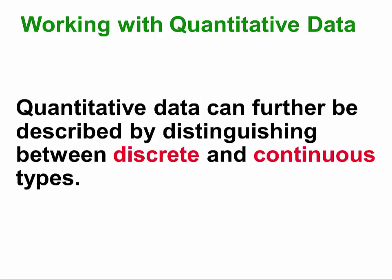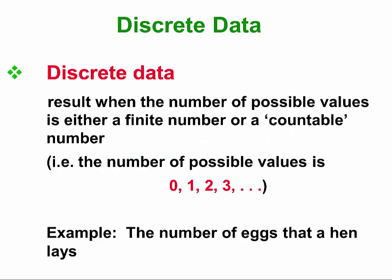Quantitative data can be either discrete or continuous. Discrete are the whole numbers 0, 1, 2, 3. Discrete data have gaps — they wouldn't include a number like one and a half.